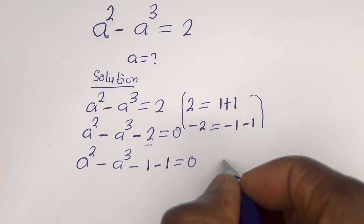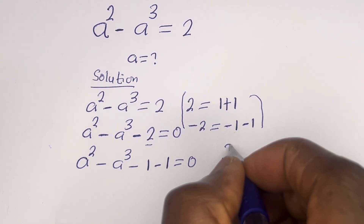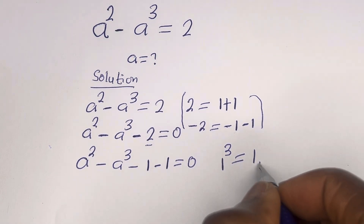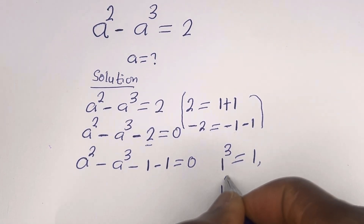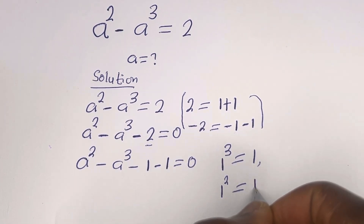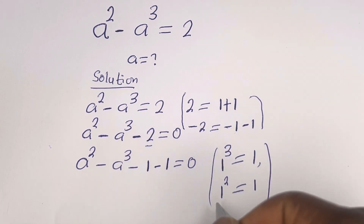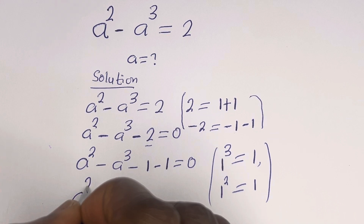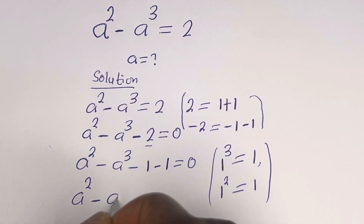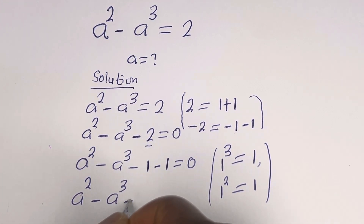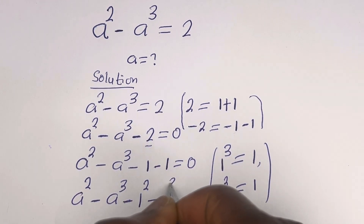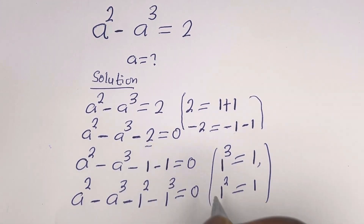Take note that if you have 1 to the power of 3, this is equal to 1. Also, if you have 1 squared, this is equal to 1. So this can be written as a squared minus a to the power of 3 minus 1 squared minus 1 to the power of 3 is equal to 0.